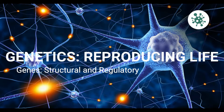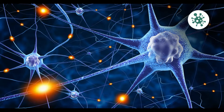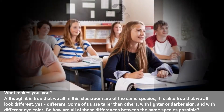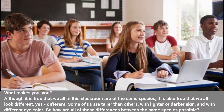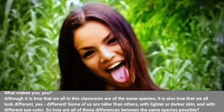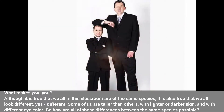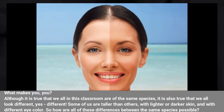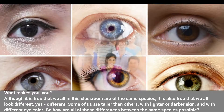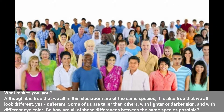Genetics — reproducing life, genes: structural and regulatory. What makes you, you? Although it is true that we all in this classroom are of the same species, it is also true that we all look different. Some of us are taller than others, with lighter or darker skin and with different eye color. So how are all of those differences between the same species possible?